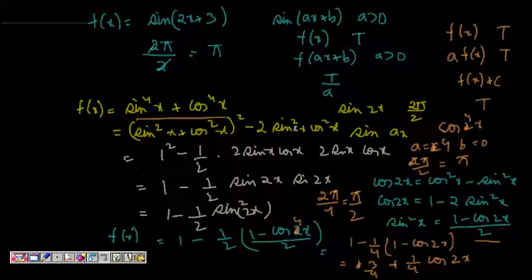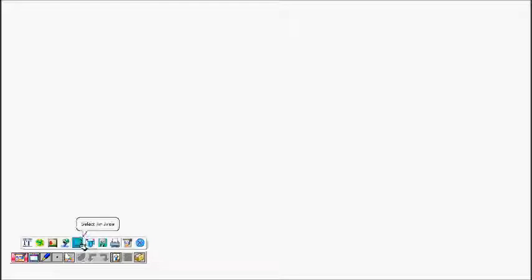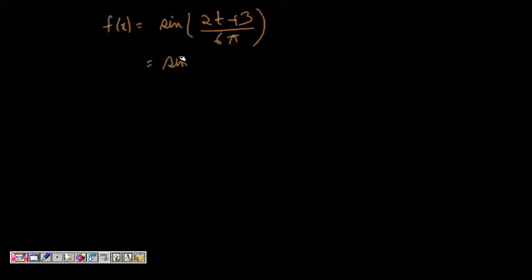One more small example is, if f of x is equal to sine of 2t plus 3 by 6 pi, we can write again this is equal to sine of t by 3 pi plus 2 pi.